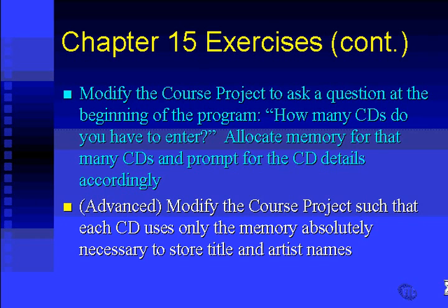That's wasteful, especially if we've got a great number of CDs. If we had a thousand CDs, we could be wasting 30 kilobytes of information. I'd like you to think about how you might do that — only storing exactly the amount of memory required for each title and each artist. So if CD number one is by U2 and CD number two is by Dire Straits, they're going to have different length artist names. See how you go with that.